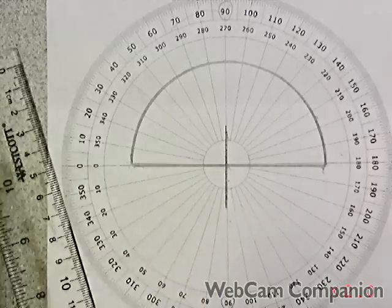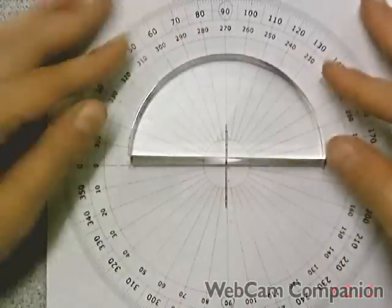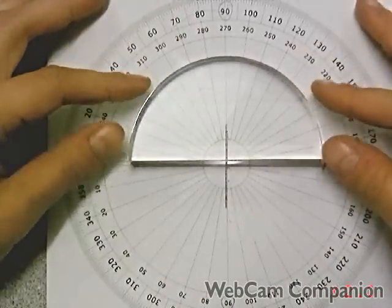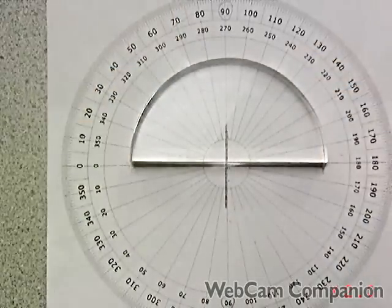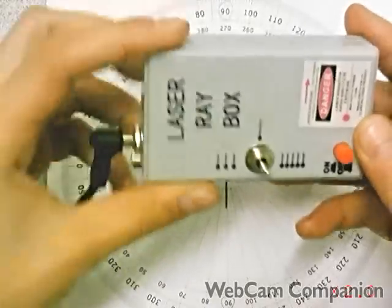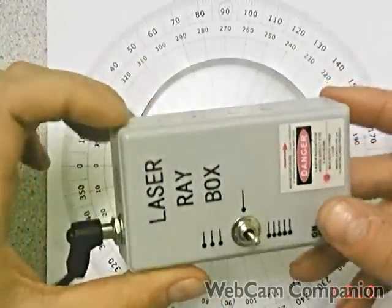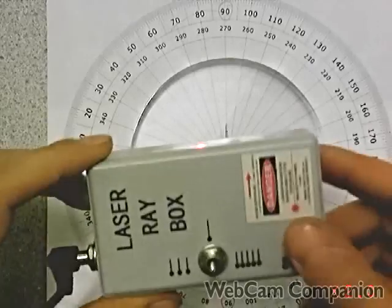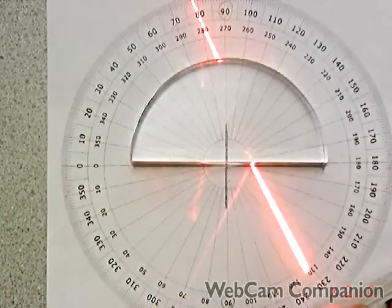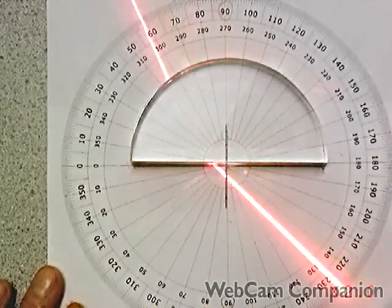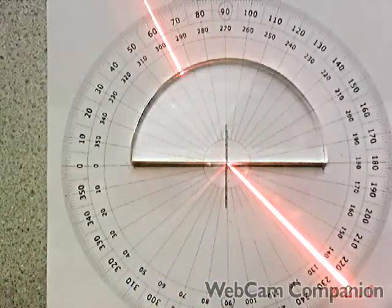I'm going to reposition my lens here and show you. This is a laser ray box. It's really great for doing these types of labs because when I click this button you can see I get a really nice sharp line that's easy for you to see.